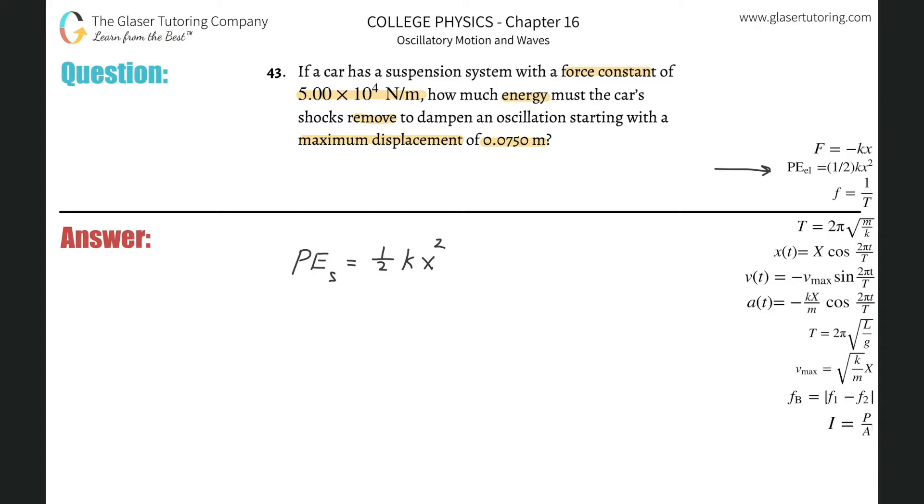So that being the case, I know that the potential energy inherent in the spring right now—the maximum potential energy, I should say—is going to equal one-half times the force constant, which was 5 times 10 to the 4th, times the maximum displacement from equilibrium.